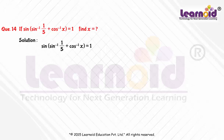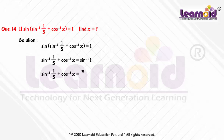Taking sin inverse on both sides, we will get sin inverse 1 by 5 plus cos inverse x is equal to sin inverse 1. Since sin inverse 1 is pi by 2, we get sin inverse 1 by 5 plus cos inverse x is equal to pi by 2.